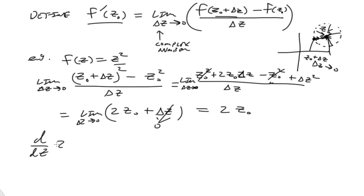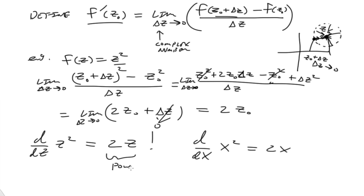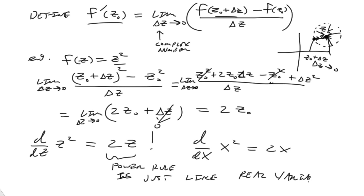So we've just learned that d/dz of z squared is equal to 2z. That's exactly like in real variables — the power rule appears to work just like with real variables. So we have 2z, and that's a pretty nice result. Now let's study another example where things maybe aren't so clear and it's not as straightforward as this simple function.